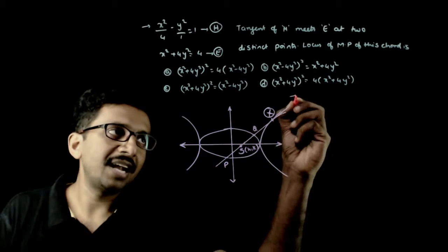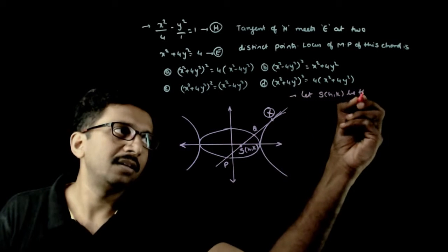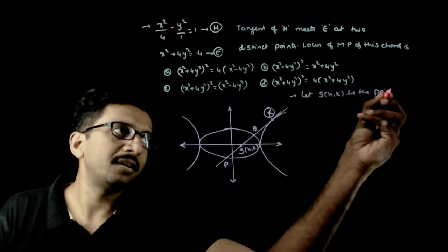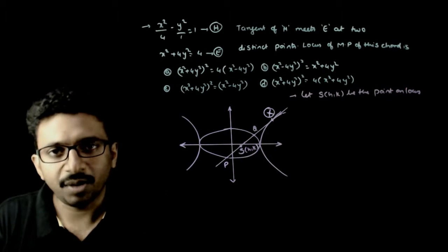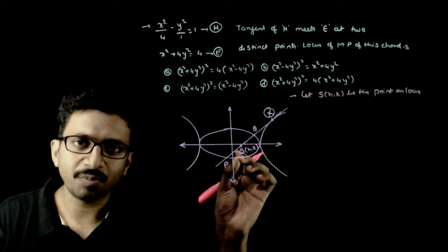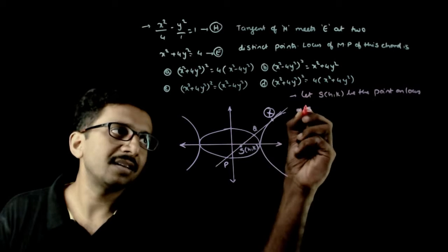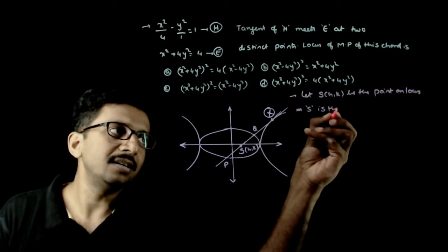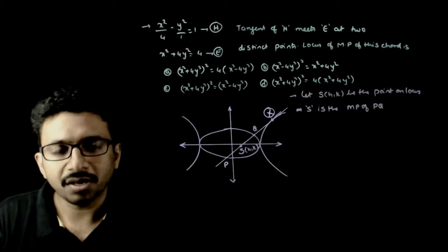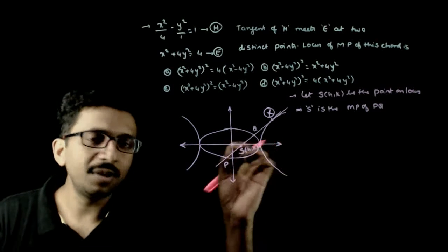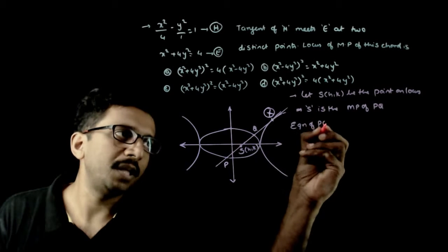How do we start? Let S(h, k) be a point on the locus. If S(h, k) is a point on the locus, then S is the midpoint of PQ. So, what is the equation of PQ?